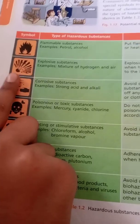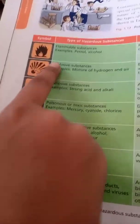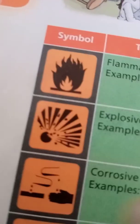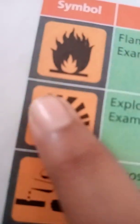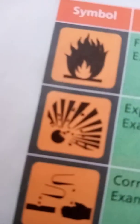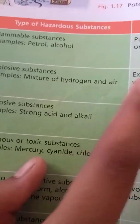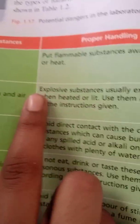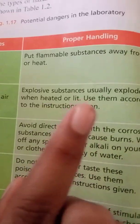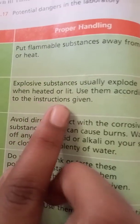The next one is explosive substances. You see this symbol — it looks like a bomb that has exploded. Explosive substances — examples are a mixture of hydrogen and air, and bombs. Explosive substances usually explode when heated or lit. Use them according to the instructions given.